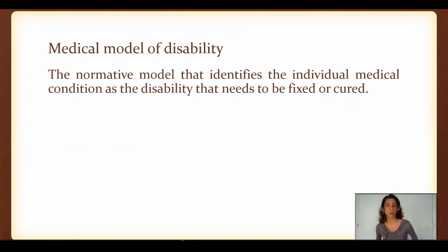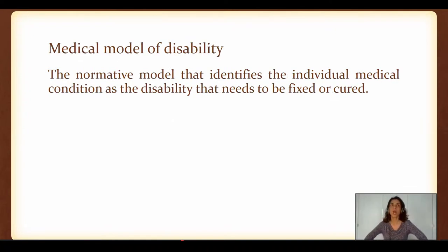This is further explained in the preamble of the UN Convention on the Rights of Persons with Disabilities, saying: 'Disability results from the interaction between persons with impairments and attitudinal and environmental barriers that hinder their full and effective participation in society on an equal basis with others.' And finally, we have the normative model — the medical model of disability — which considers the person who is deaf or hard of hearing as having something that needs to be fixed or cured.